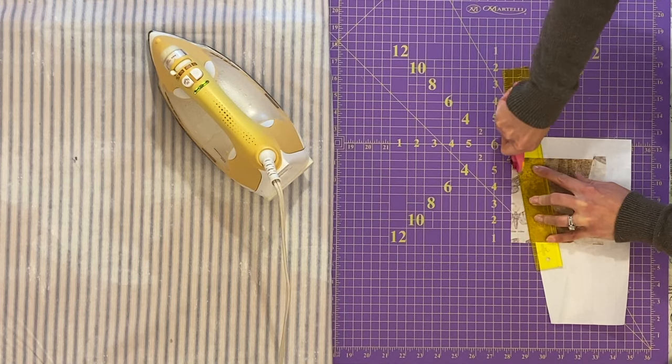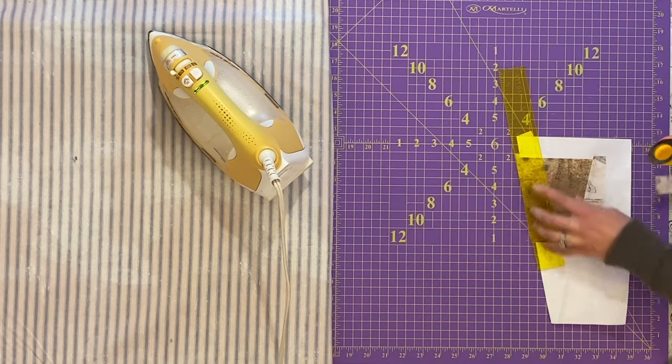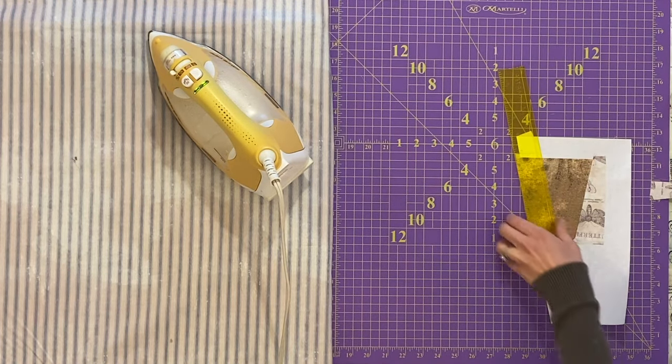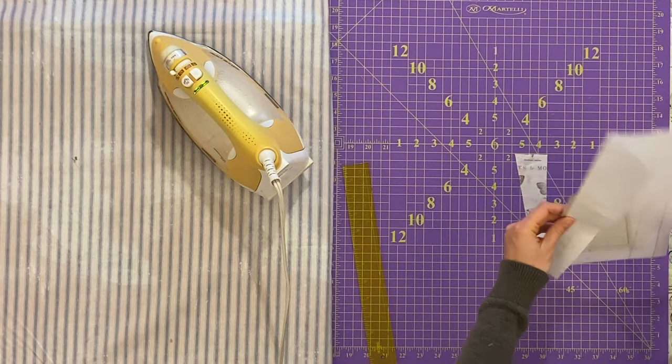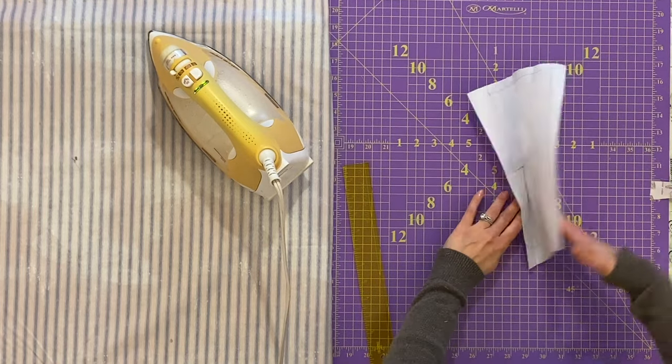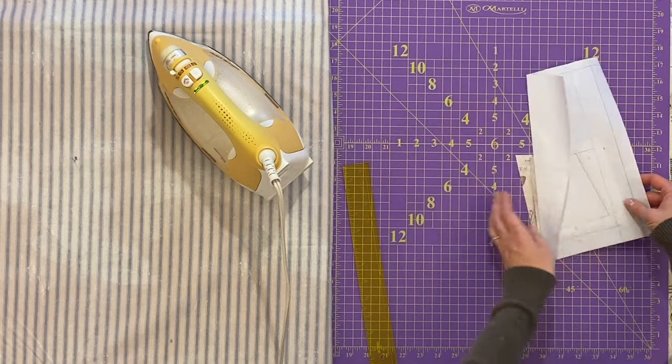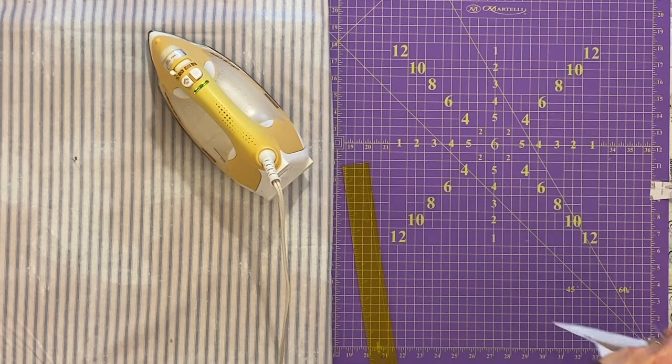Now we're going to take our template and turn it the correct usual way that we're used to, line it up along the cut edge, check to make sure everything's correct, and then we're going to go ahead and stitch again.